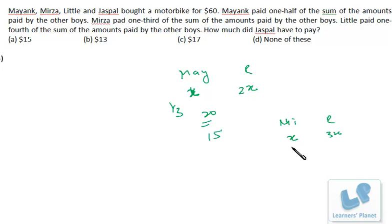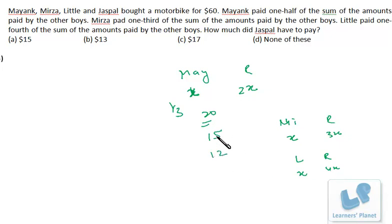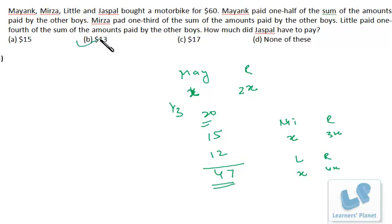Little paid one-fourth of the sum paid by the others — ratio 1:4, so Little pays one-fifth of total = $12. Together Mayank, Mirza, and Little pay 20 + 15 + 12 = $47. The remaining $13 is what Jaspal has to pay. No need for lengthy calculation — it's very simple mental arithmetic.